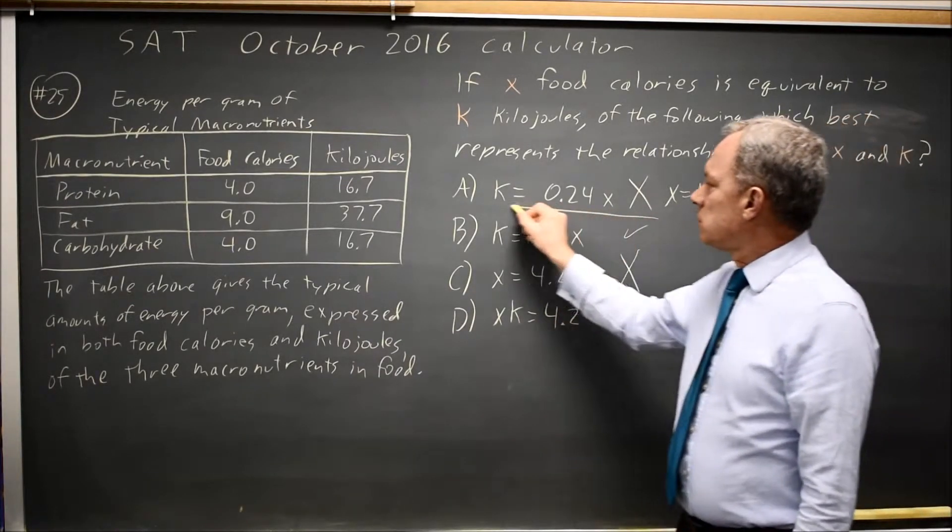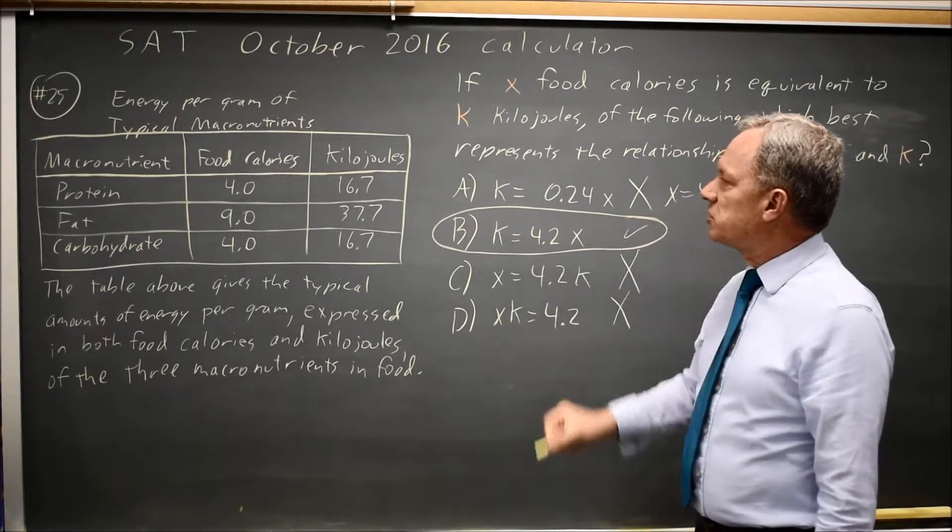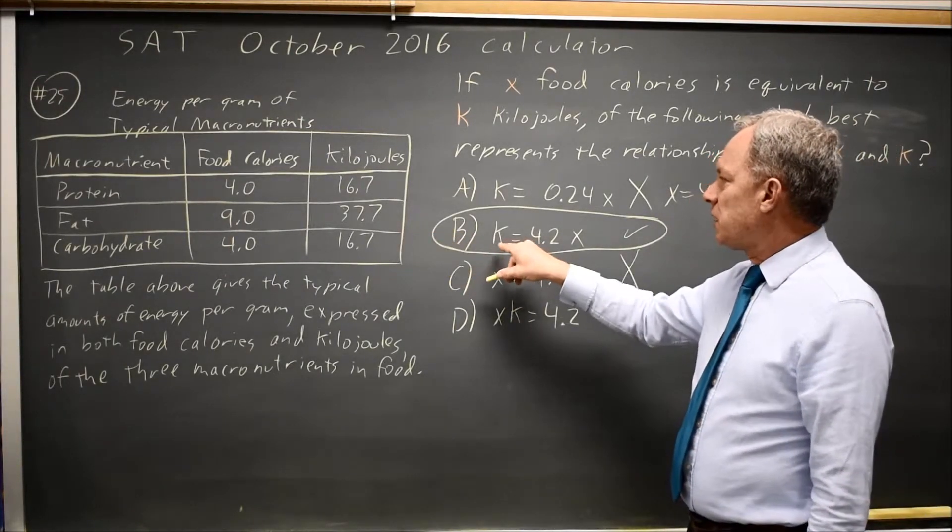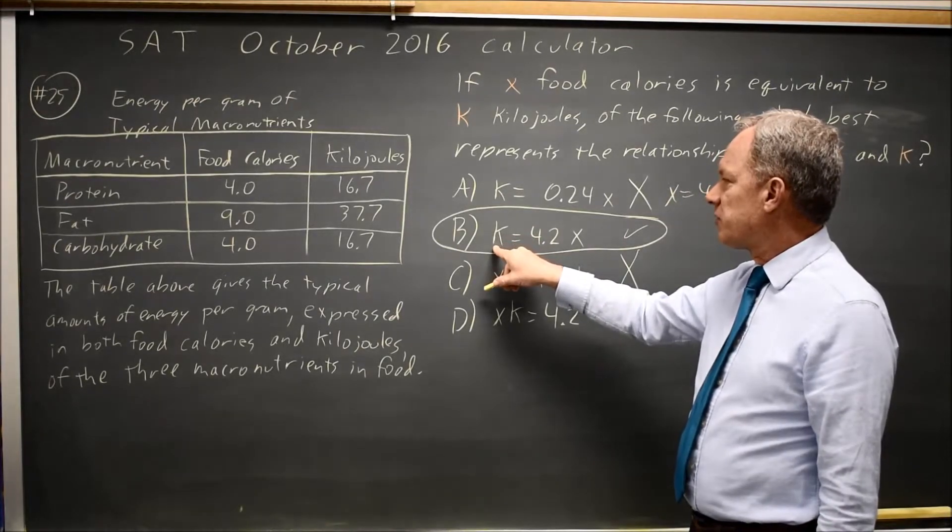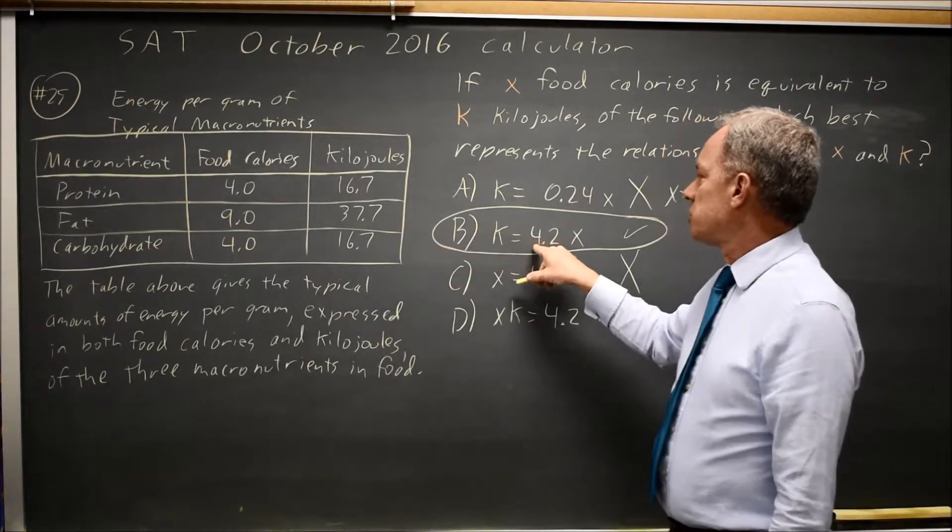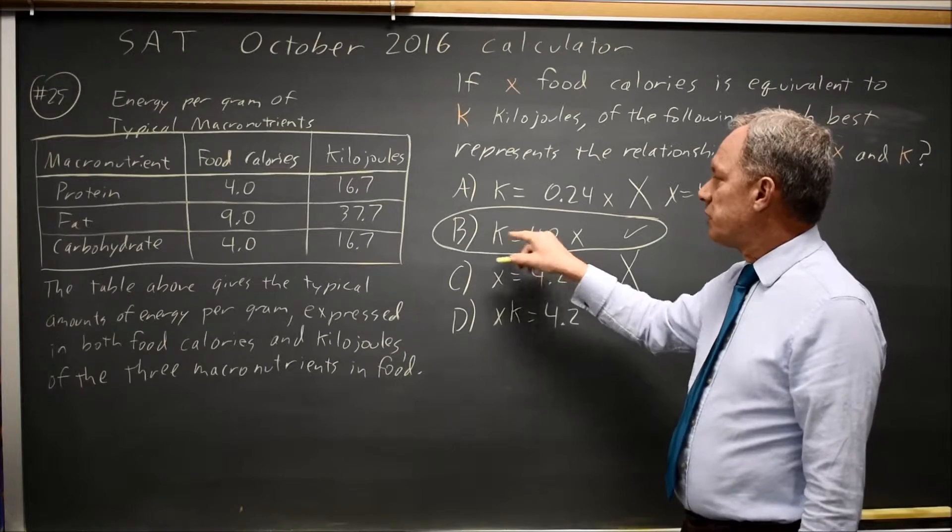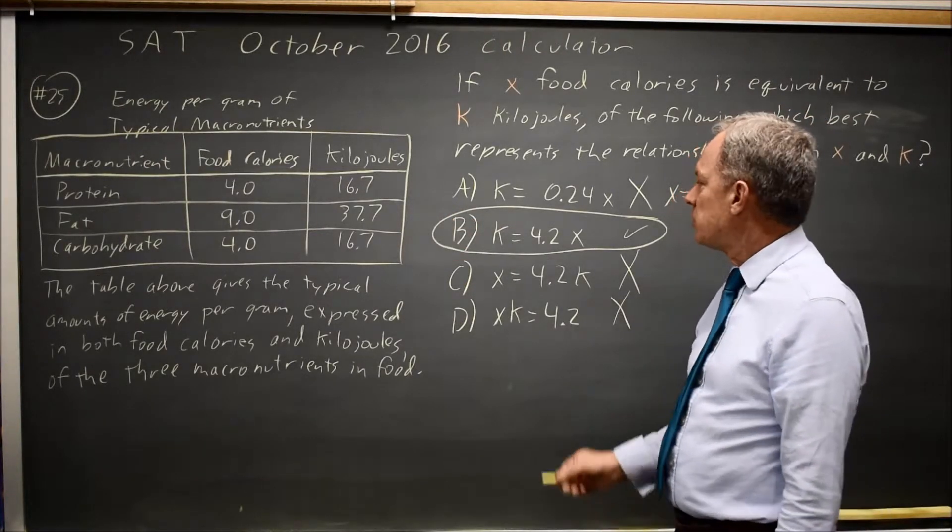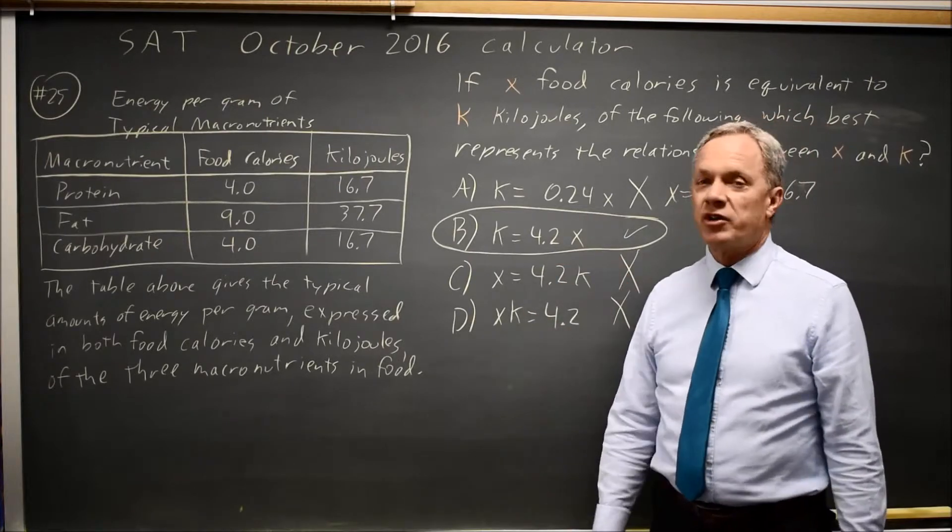So I only had to check on protein or carbohydrate, but if I check fat also, k to kilojoules, 37.7, 9 times 4.2 would be 37.8, which is approximately 37.7 within the accuracy of the table that matches for all three values.